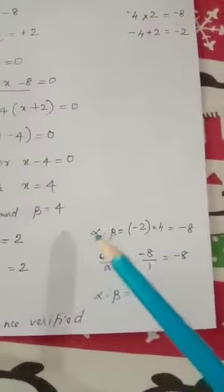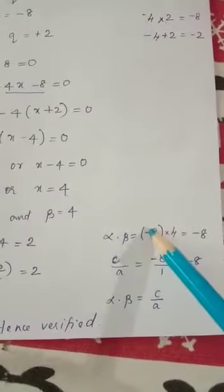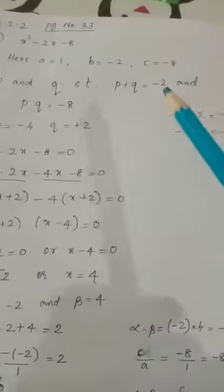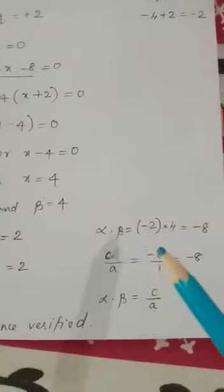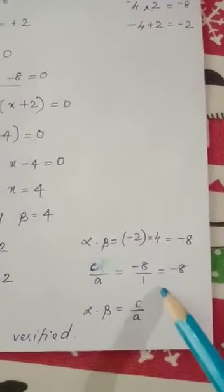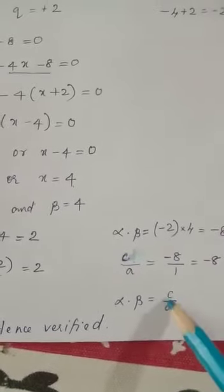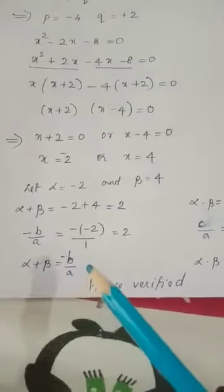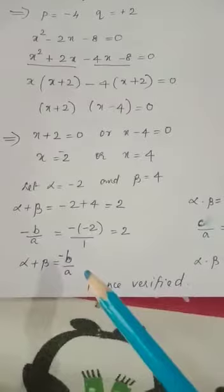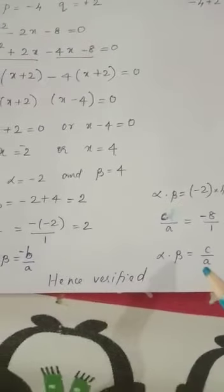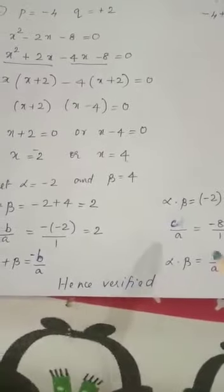Similarly, alpha into beta equals minus 2 into 4 equals minus 8. And c by a equals minus 8 by 1 equals minus 8. So alpha into beta is equal to c by a. Therefore alpha plus beta equals minus b by a, and alpha into beta equals c by a. Hence verified.